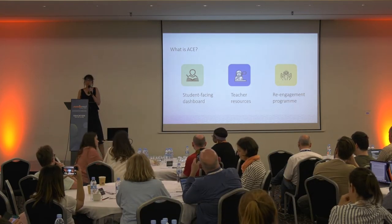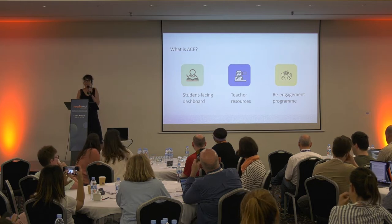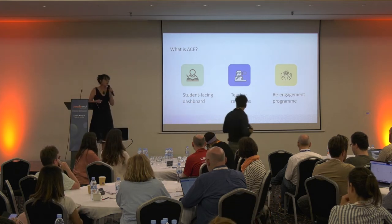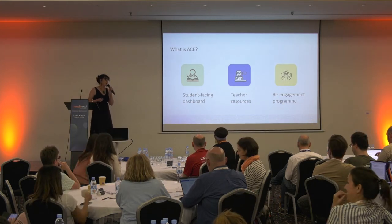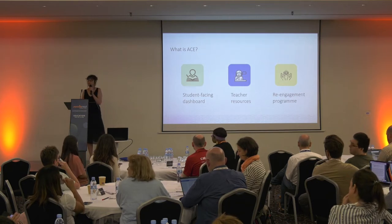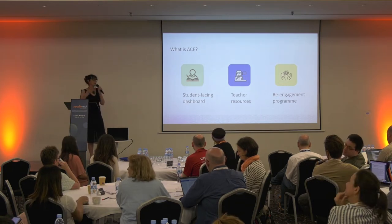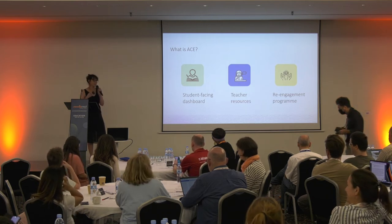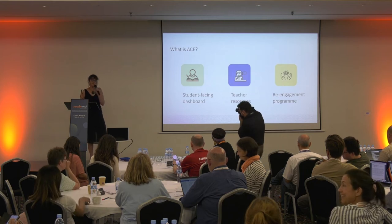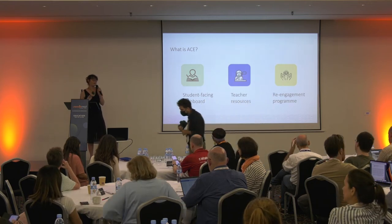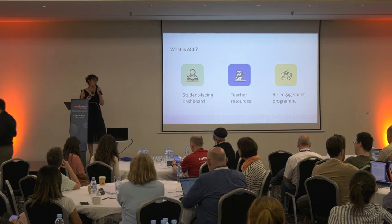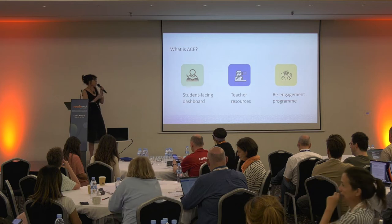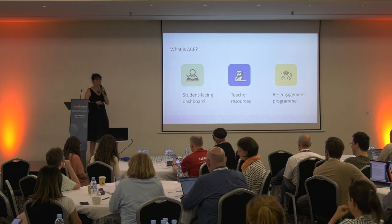ACE itself is derived by Moodle engagement data that uses both cognitive depth and social breadth measures on each activity that sits inside Moodle. But we also use other data points. We're combining our Moodle data points with things like library information, Zoom, Echo 360, as well as a bunch of what we understand to be predictors of risk. This is then put into Moodle and pushed to our machine learning to produce risk scores, while ACE itself also produces engagement data. We use this for our re-engagement program.